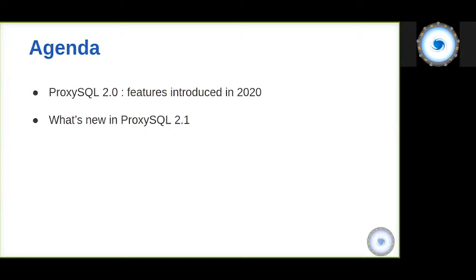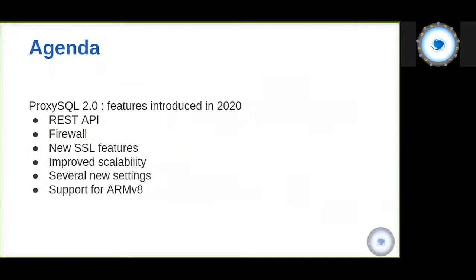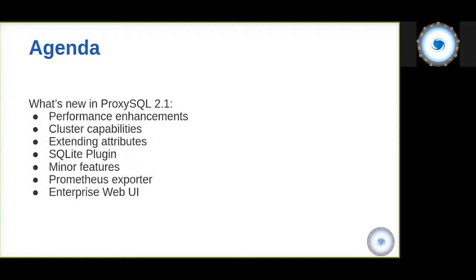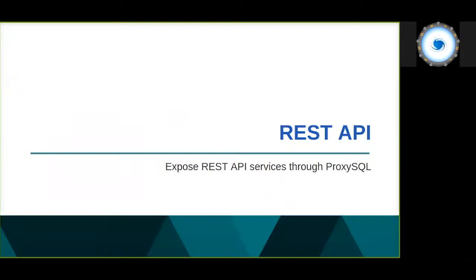Our agenda: we're going to discuss all the features introduced in 2019 related to ProxySQL 2.0, and also what is new in ProxySQL 2.1, which is going to be released very soon. For 2.0 we'll cover the REST API, the firewall, new SSL features, improved scalability, new settings, and ARM processor support. For 2.1 we'll discuss performance enhancements, new cluster capabilities, extended attributes, the SQLite plugin, the Prometheus exporter, and the enterprise web UI.